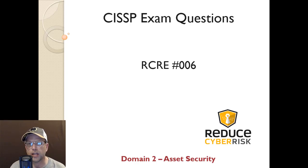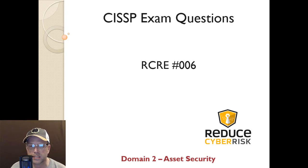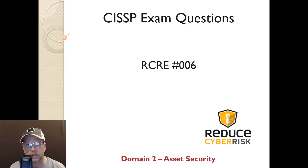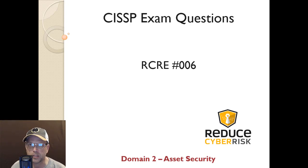Hey all, this is Sean Gerber again with Reduce Cyber Risk. This is part of my CISSP exam questions I'm providing for individuals that want to tie into Reduce Cyber Risk. This is RCR Echo, Exam 006, Domain 2: Asset Security. Like I said before, taking the test is a bear — these are great videos to help you understand the process around taking these tests, and they tie in directly with the domains and training I've put out there.